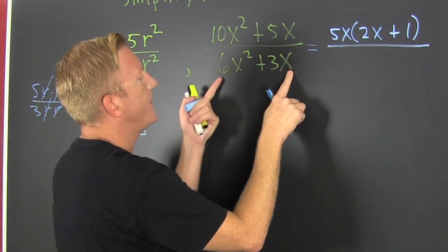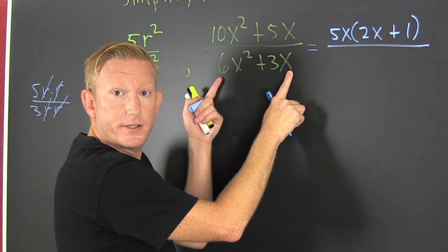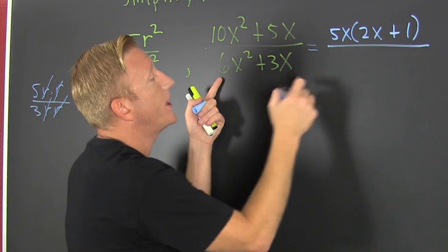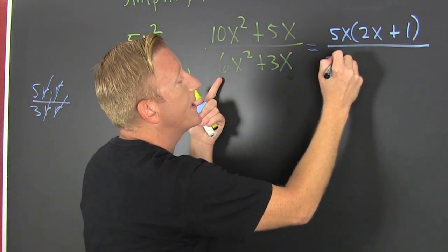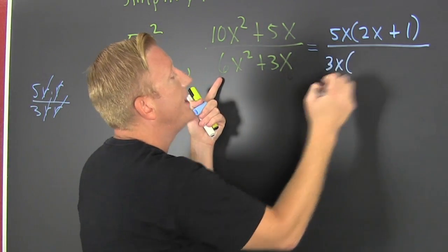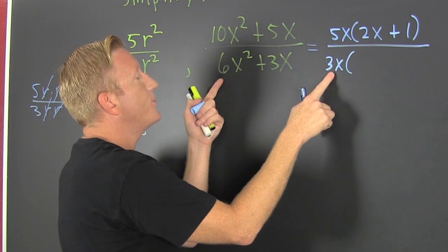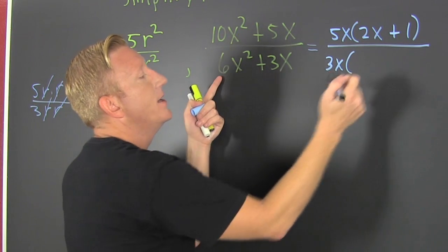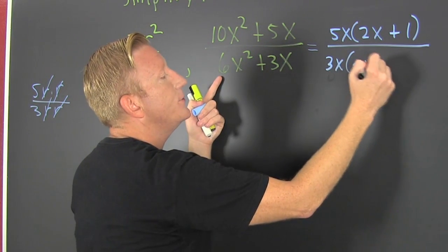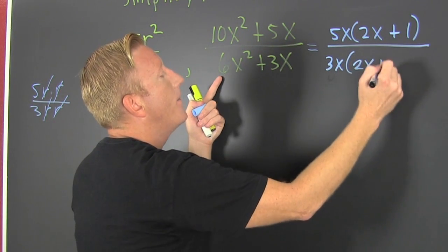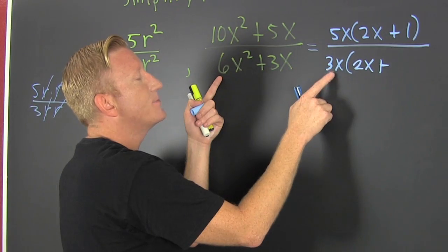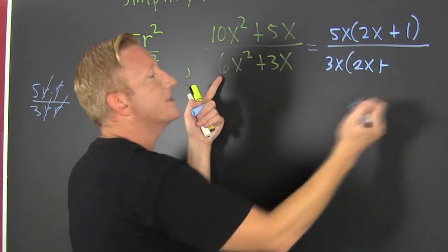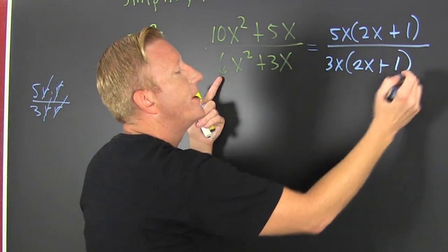And that's all divided by — I need to pull out the common factor there. Looks like it's a 3x, so I pull out a 3x. Then what do I multiply 3x by to get 6x squared? Looks like 2x. Plus, what do I multiply 3x by to get 3x? A 1.